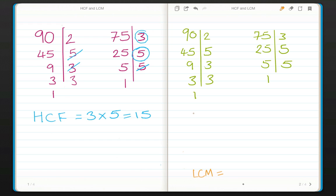So on the right hand side of the page we're going to work out the lowest common multiple. To do that we need to find 90 and 75 as product of its prime factors. So 90 can be written as 2 times 3 times 3 times 5, which we can simplify to 2 times 3 squared times 5.